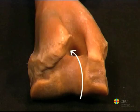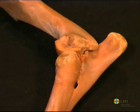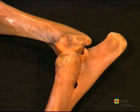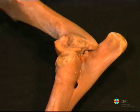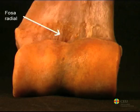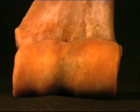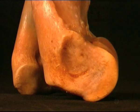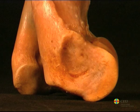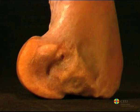This fossa introduces the anconial process of the ulna during elbow extension movements. Dorsal to the trochlea, on the cranial side, is the radial fossa. On both sides of the trochlea are the epicondyles. The medial epicondyle is more prominent and gives rise to the flexor muscles of the carpus and digits, while the extensor muscles originate on the lateral side.